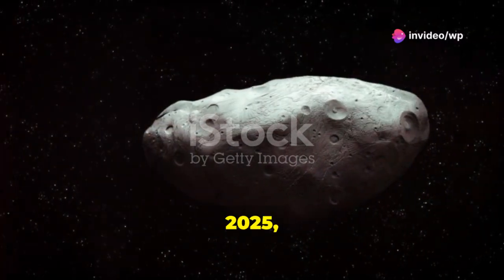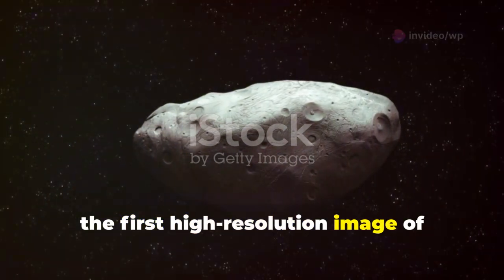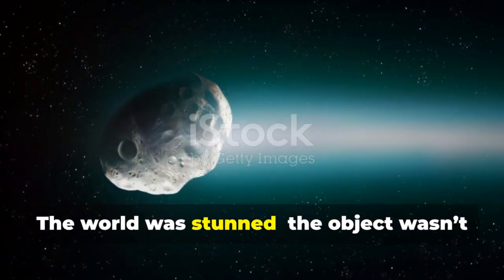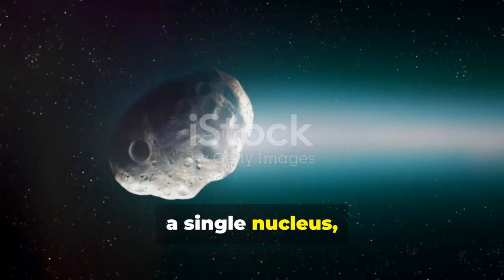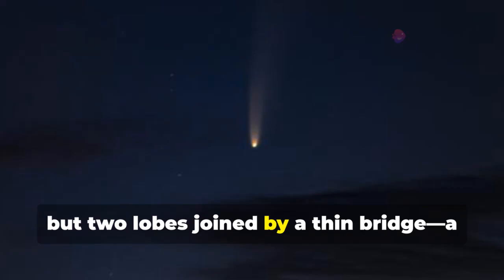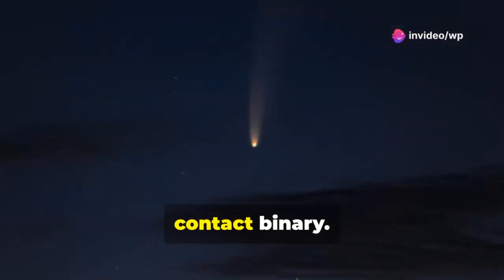On August 28, 2025, the first high-resolution image of 3I Atlas was released. The world was stunned. The object wasn't a single nucleus, but two lobes joined by a thin bridge, a contact binary.